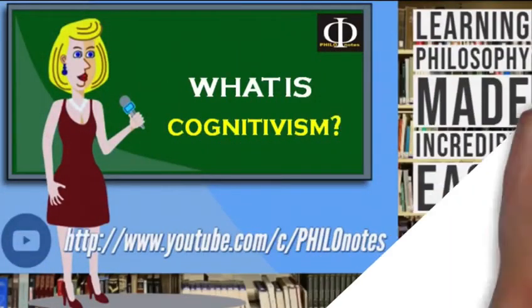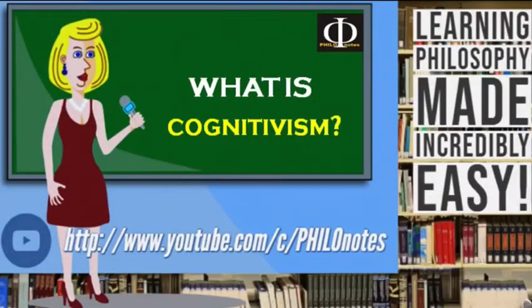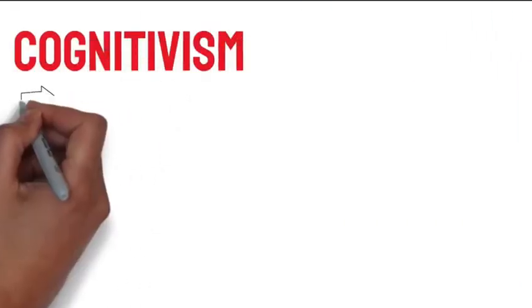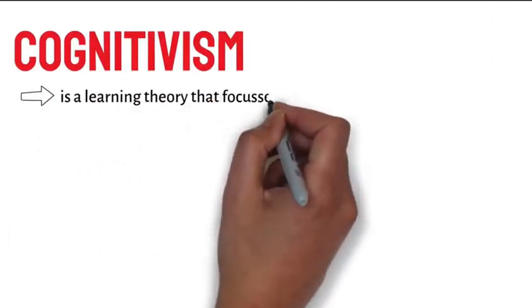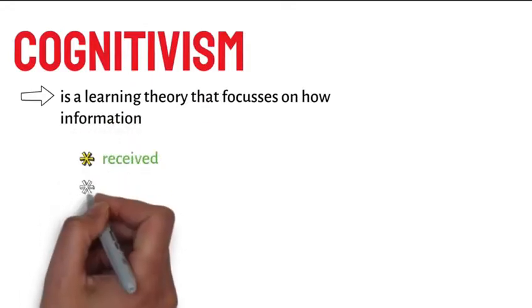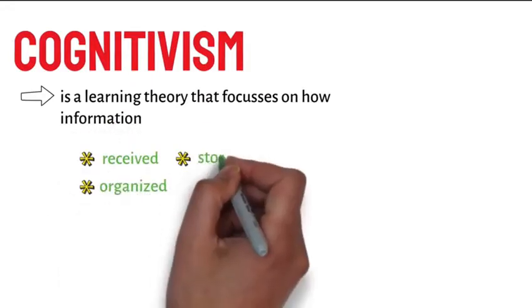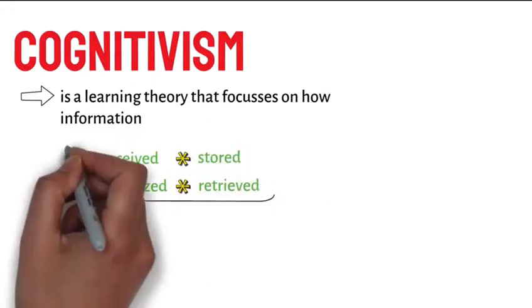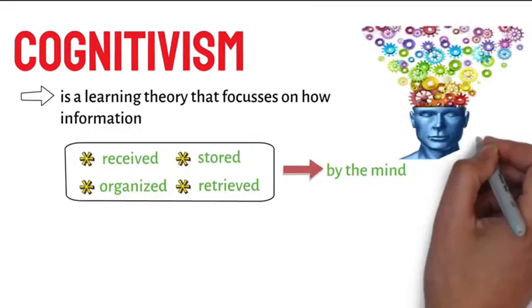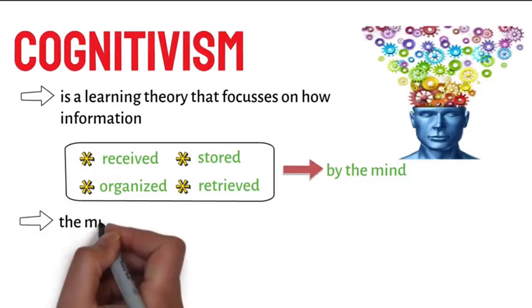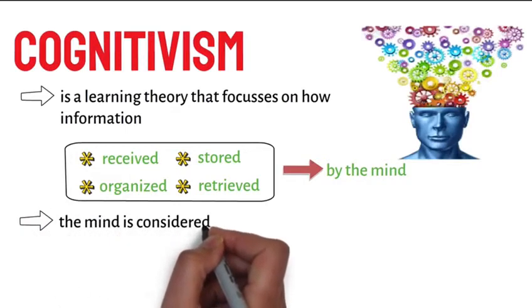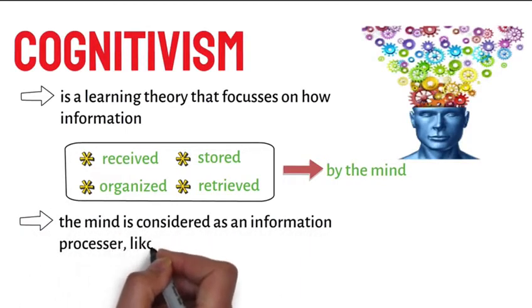What is Cognitivism? Cognitivism is a learning theory that focuses on how information is received, organized, stored, and retrieved by the mind. The mind is considered as an information processor, like a computer.